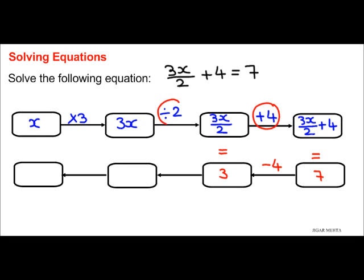Next, opposite of divide by 2 is multiply by 2, which means 3 times 2 gives me 6, which means 3x equals 6.